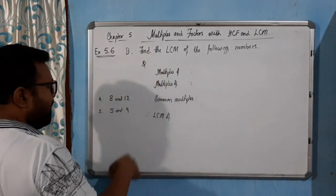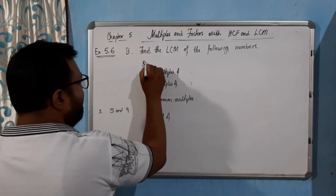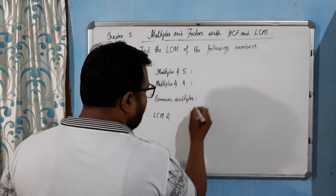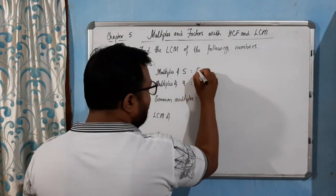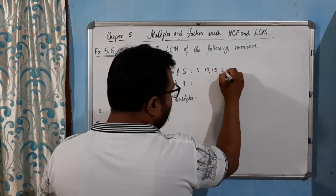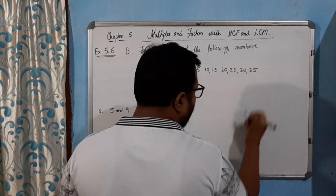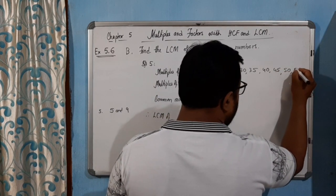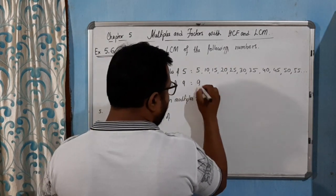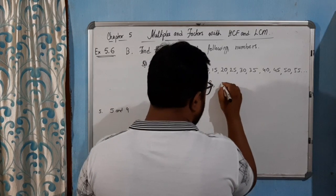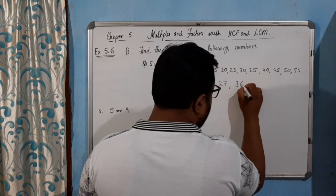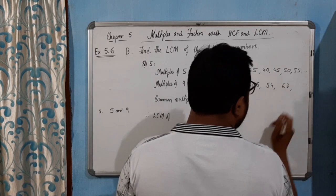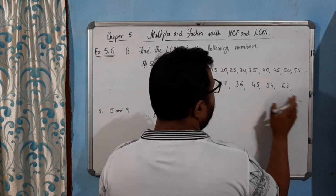Solution five: find the LCM of five and nine. I think we have to write a little bit more because nine is larger. For five: five, ten, fifteen, twenty, twenty-five, thirty, thirty-five, forty, forty-five, fifty, fifty-five, and so on. For nine: nine, eighteen, twenty-seven, thirty-six, forty-five — forty-five is already crossed here.